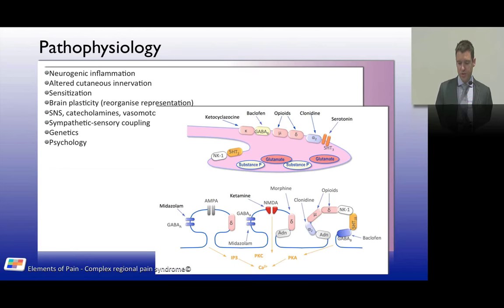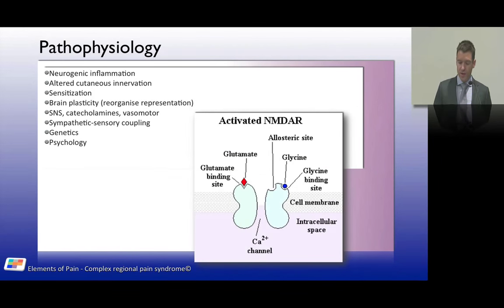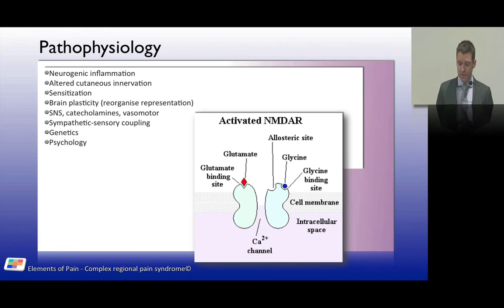Central sensitization occurs when primary afferents reach the superficial layers of the dorsal horn, where glutamate, substance P, and CGRP interact with second-order neurons. The NMDA receptor is integral to central sensitization. Ketamine, an NMDA antagonist, has been shown to reduce pain in CRPS in certain cases — not a cure, but meaningful pain reduction.